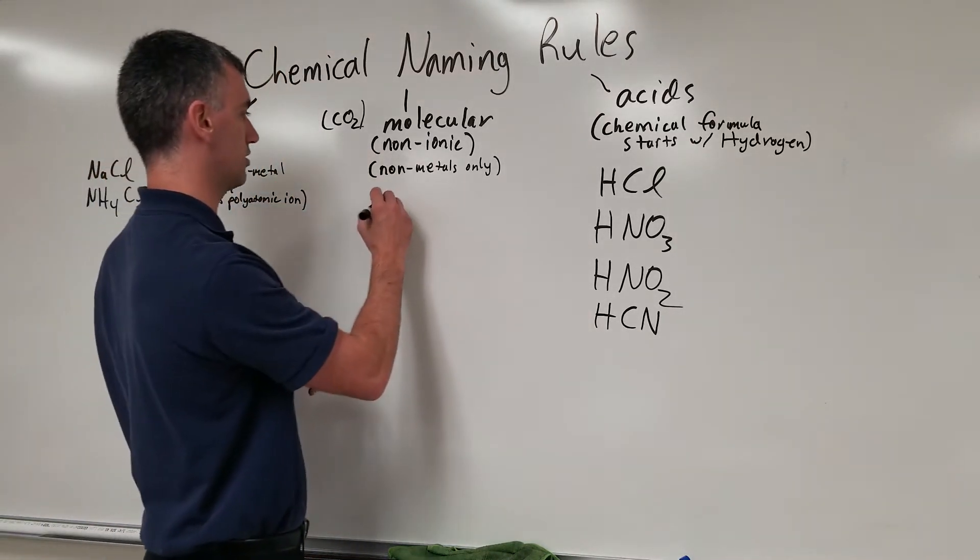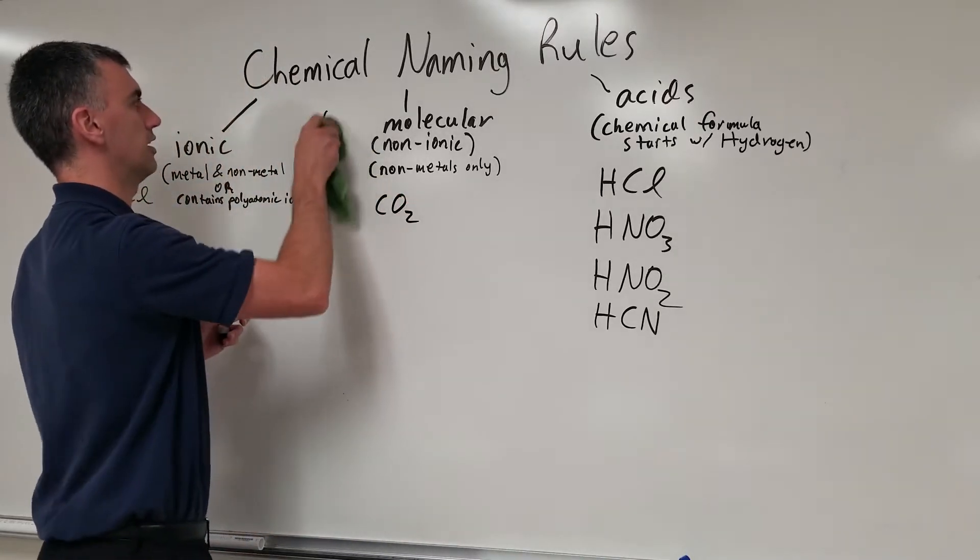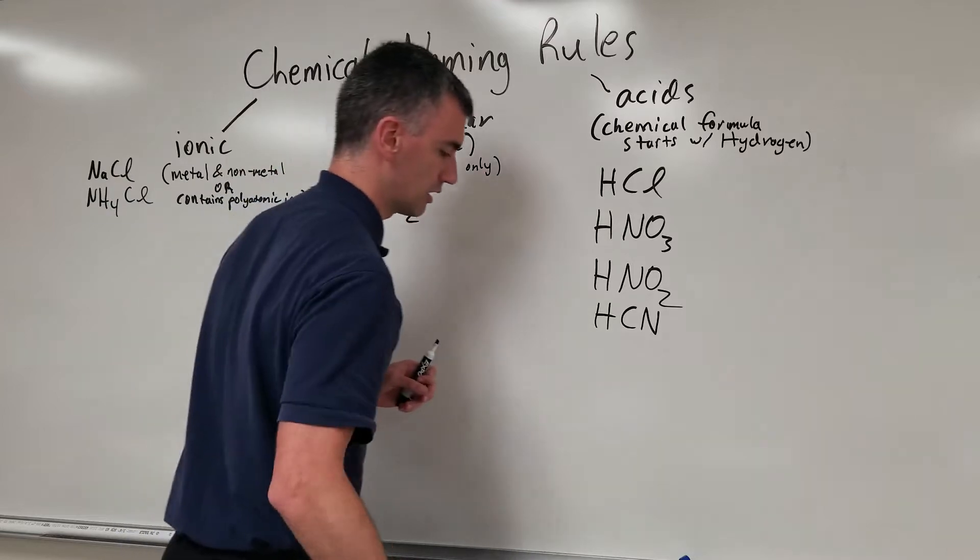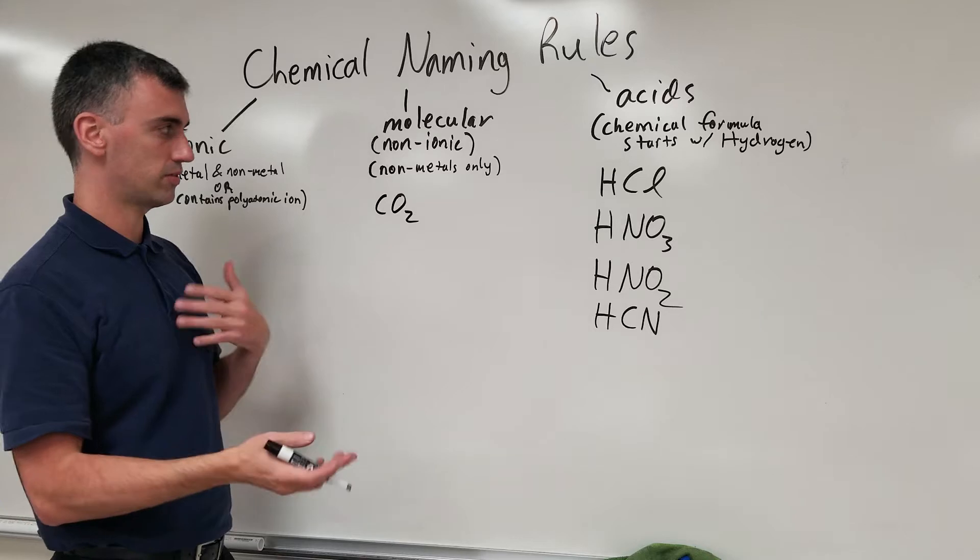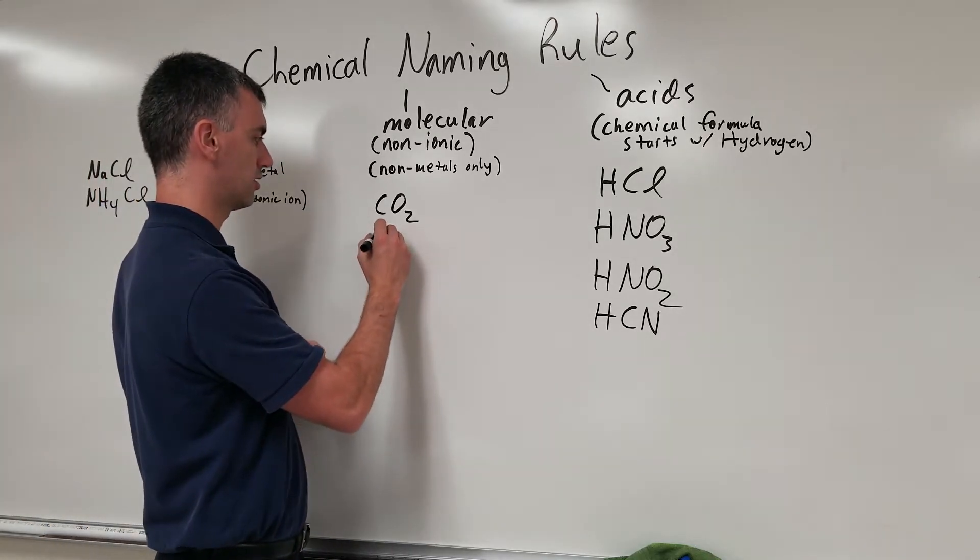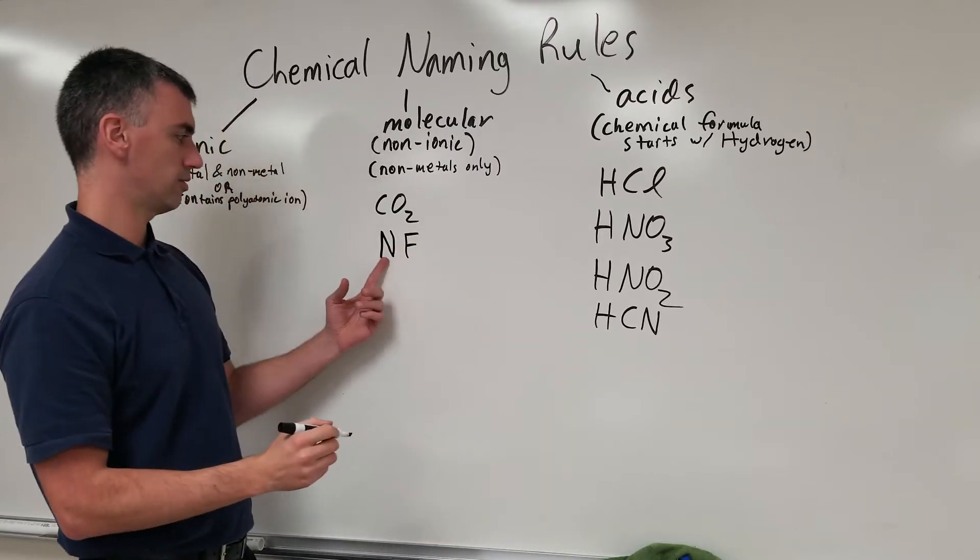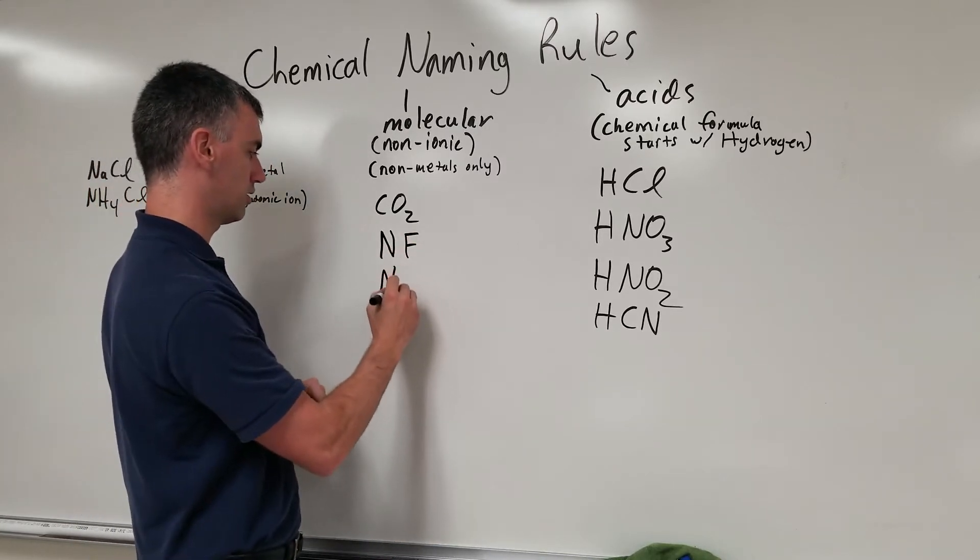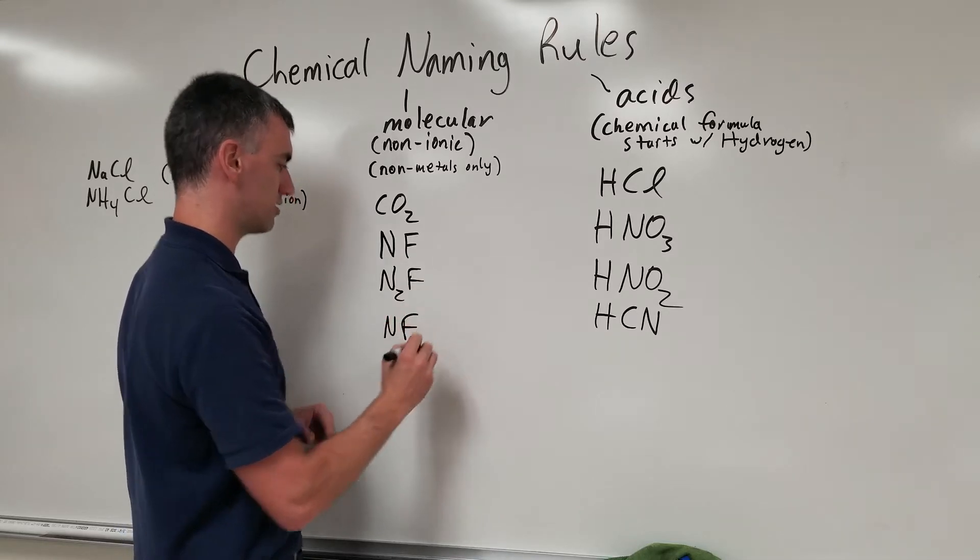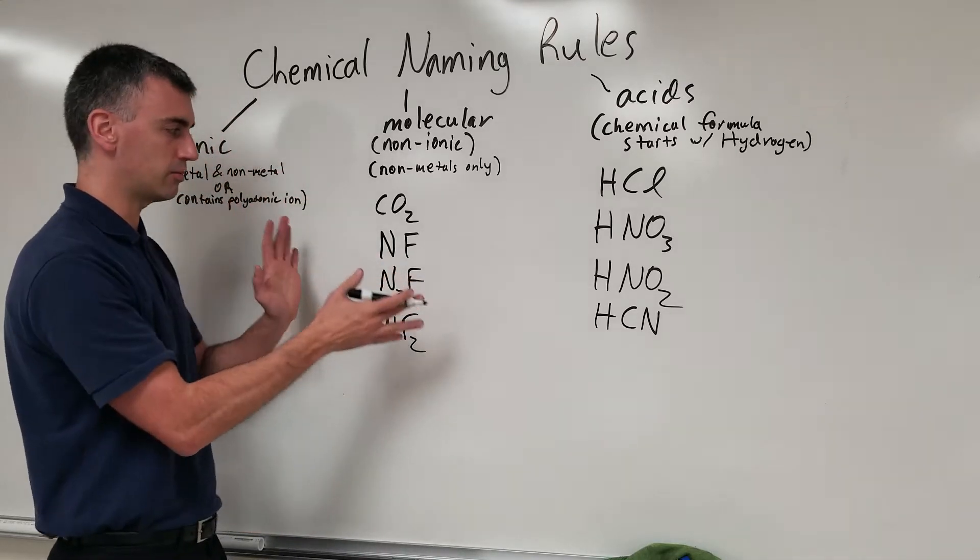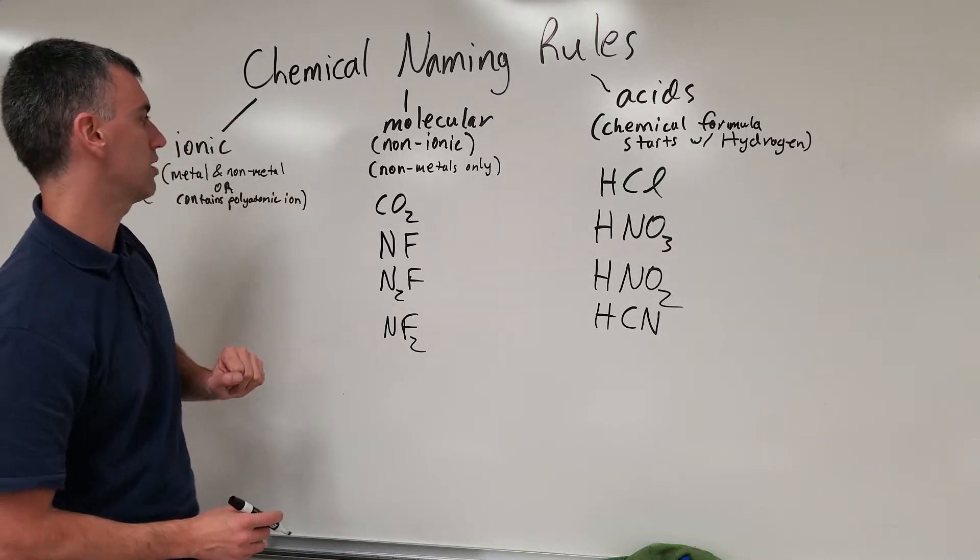Molecular, again, CO2 would be a good example. Maybe I can throw out some other examples that will be useful. I'm not even sure if these are real compounds, but one nitrogen one fluorine, two nitrogens and a fluorine, a nitrogen and two fluorines. I don't know if those are real compounds or not, but they'll make the point for the rules of how to name them later.